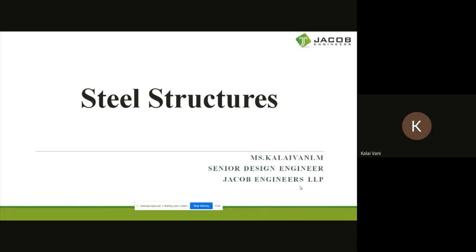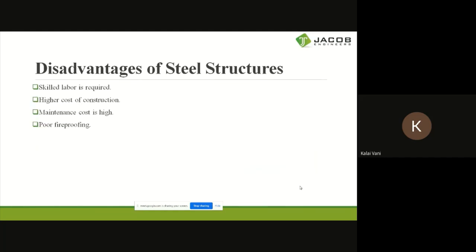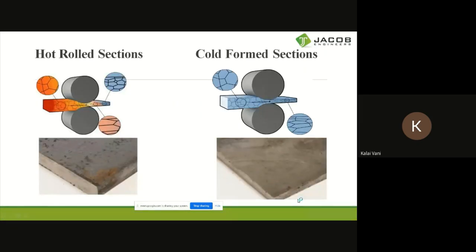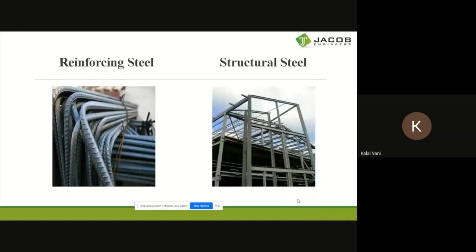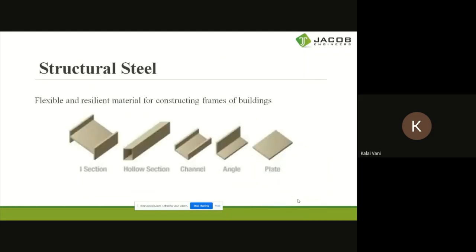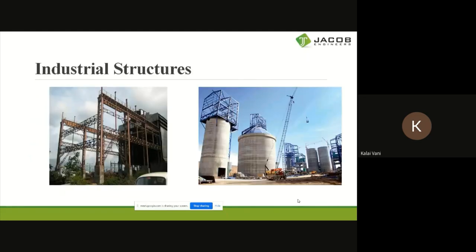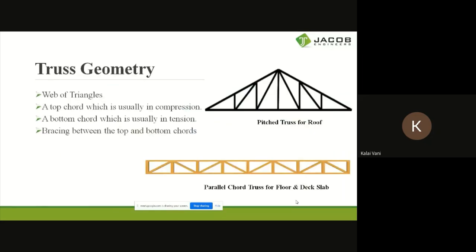Yesterday we covered the basic introduction of steel structures, the advantages and disadvantages of steel structures over concrete structures, the ingredients of steel and how they contribute to strength, the manufacturing process, hot rolled and cold formed sections, the difference between reinforcing steel and structural steel, grades of steel, and the types of structural elements suggested for steel structures and industrial structures.